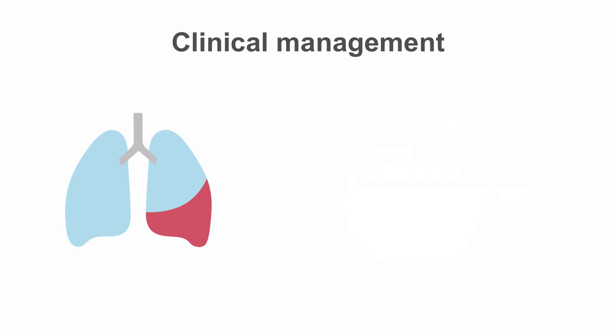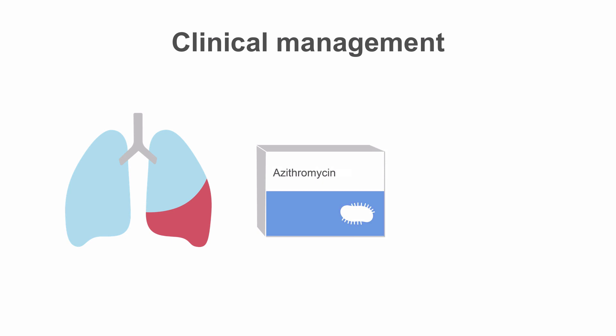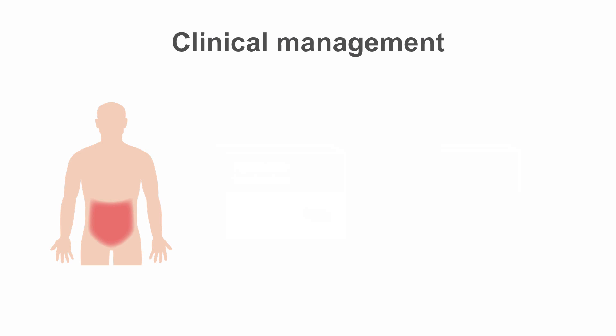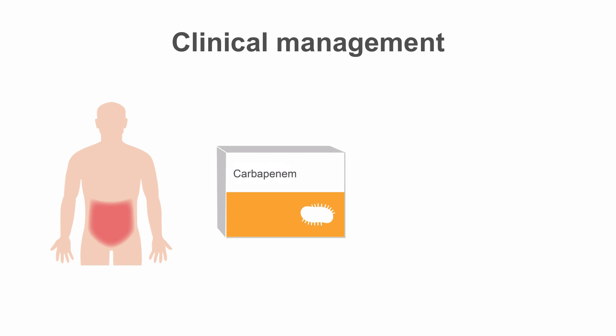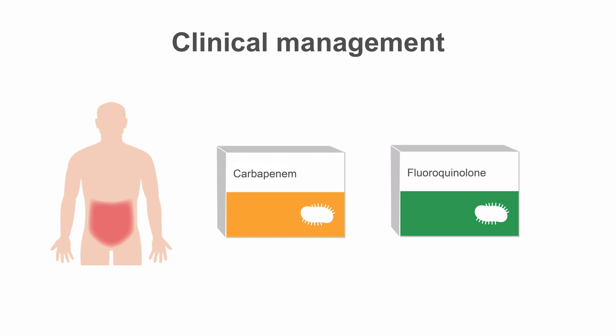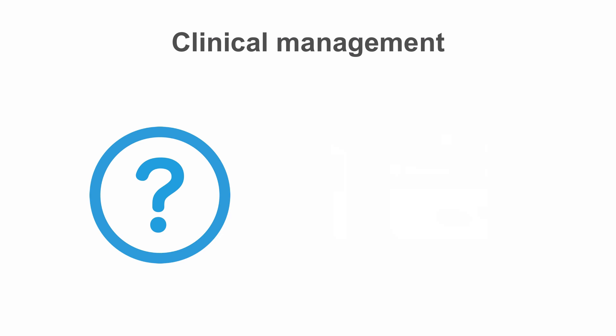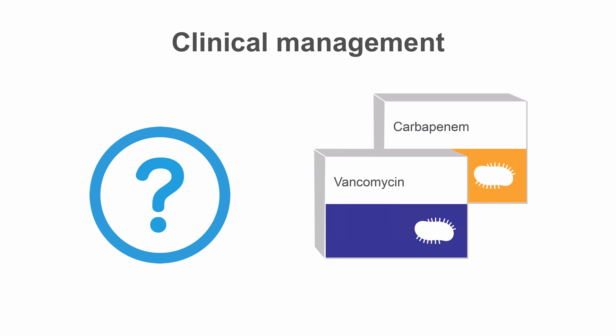Empirical choices should be based on the suspected source of infection. For pneumonia, a fluoroquinolone or azithromycin plus an antipseudomonal beta-lactam like piperacillin-tazobactam or cefepime should be given. For intra-abdominal infection, piperacillin-tazobactam or a carbapenem are excellent choices for mixed aerobic and anaerobic infections. For patients with a beta-lactam allergy, a fluoroquinolone plus metronidazole is a good alternative. For urosepsis, a fluoroquinolone is a good choice. And for sepsis of unknown cause, vancomycin plus a carbapenem like meropenem is warranted.